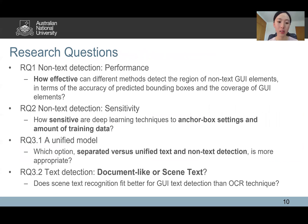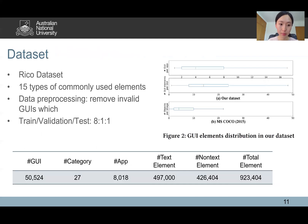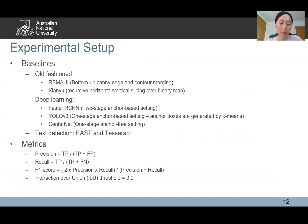We conduct the first large-scale empirical study covering both old-fashioned and deep learning methods, considering three research questions regarding performance and sensitivity. We use the RICO dataset, and after preprocessing we obtain about 50,000 GUIs from 8,000 applications across 27 categories, containing 497,000 text elements and 426,000 non-text elements. We use five baselines for non-text element detection and two baselines for text detection, covering the major model styles.